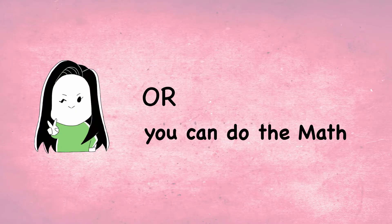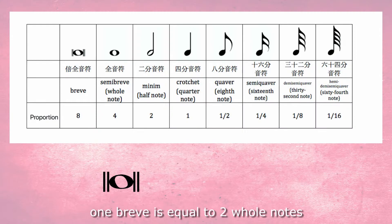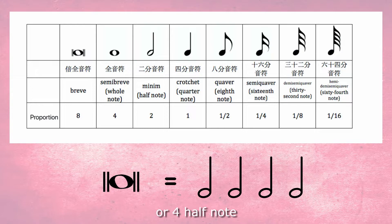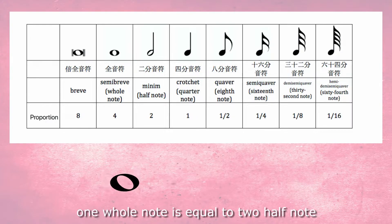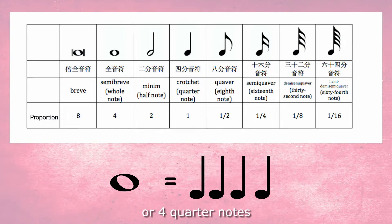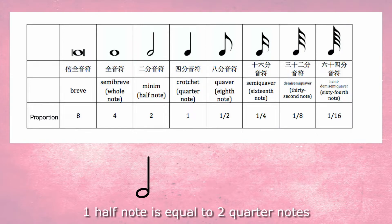Or you can do the math. One breve is equal to 2 whole notes, or 4 half notes, or 8 quarter notes. And one whole note is equal to 2 half notes or 4 quarter notes. And one half note is equal to 2 quarter notes.